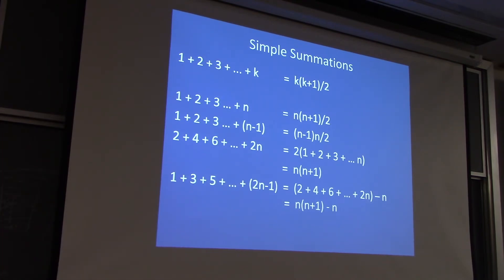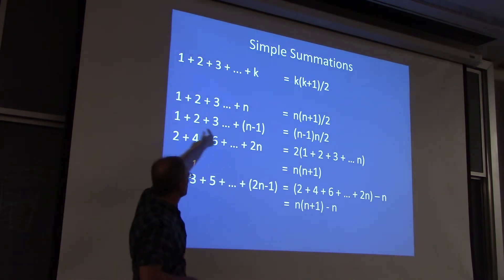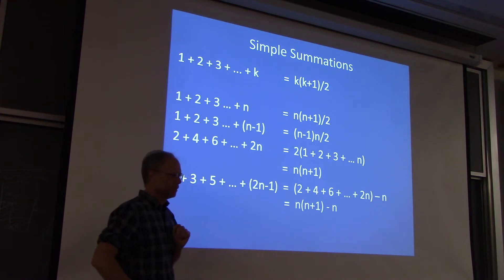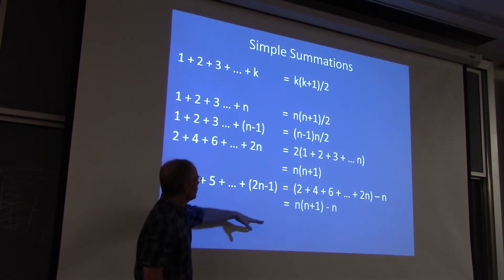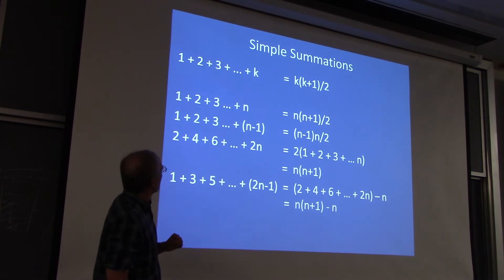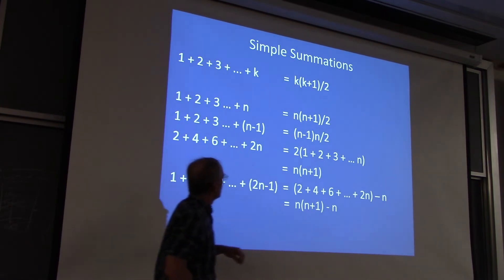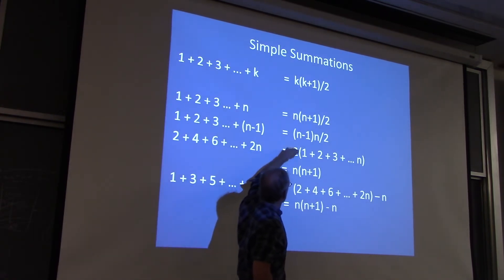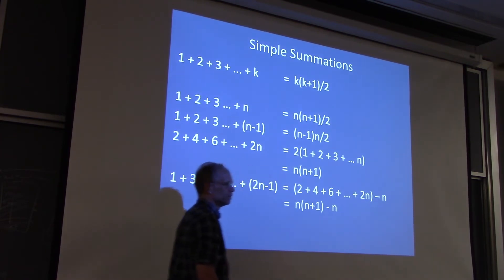So analyzing algorithms, especially ones that involve loops and nested loops, often involves counting. And the counting often involves getting it with a sum like this. And then when you come up with a sum like this, you've got to have a way of solving it. But one thing to notice is, what is the high order term of every one of these sum issues? n squared. Something times n squared.